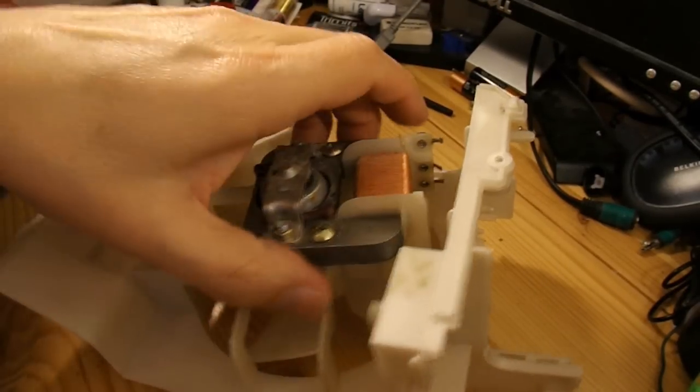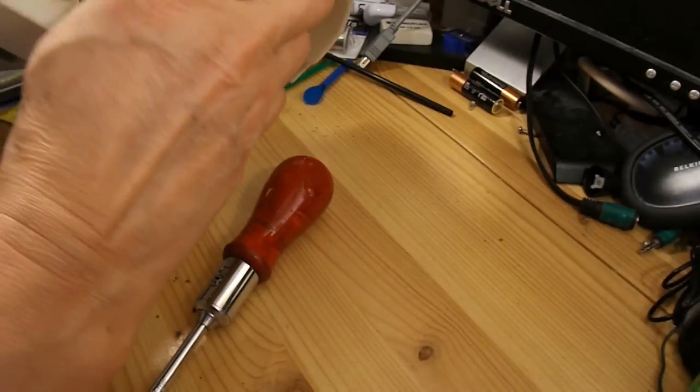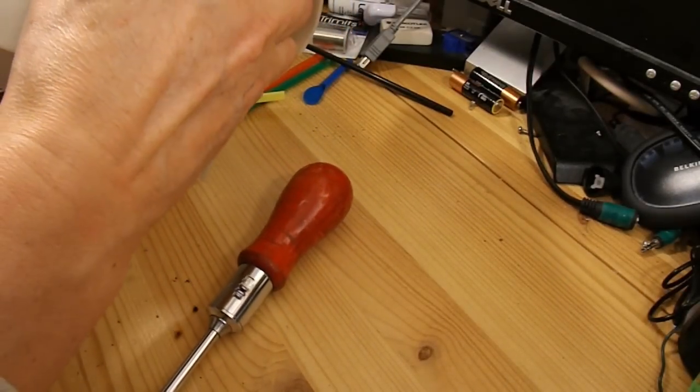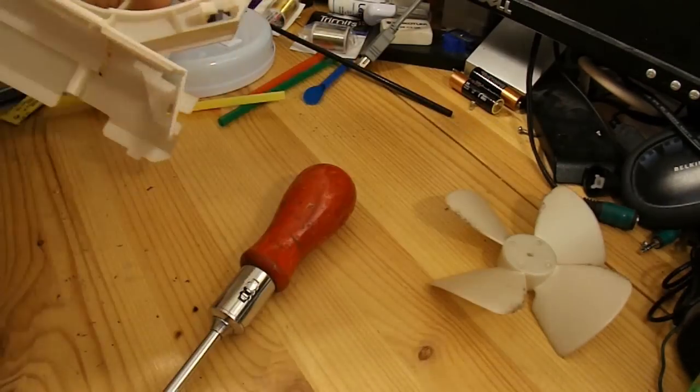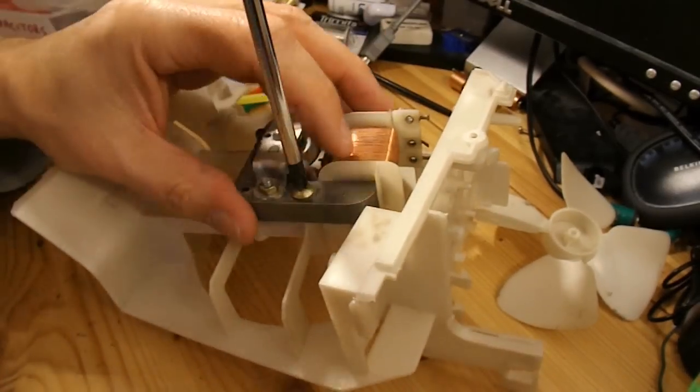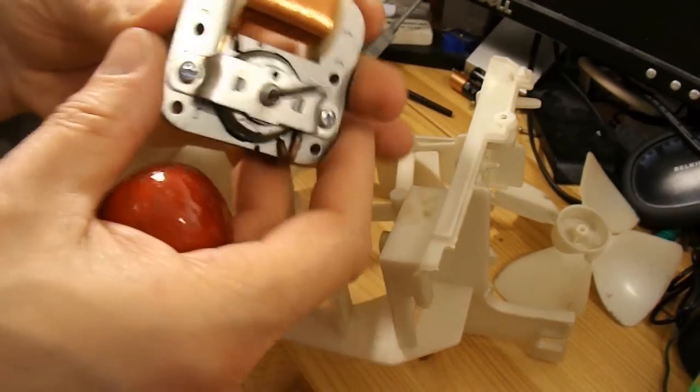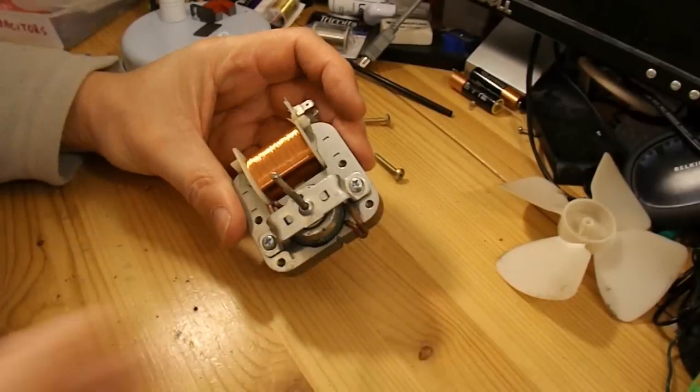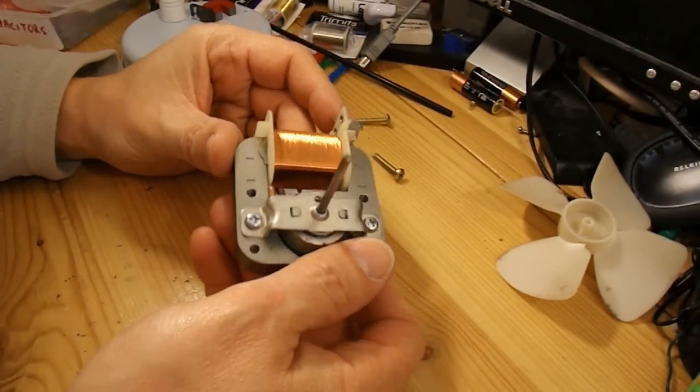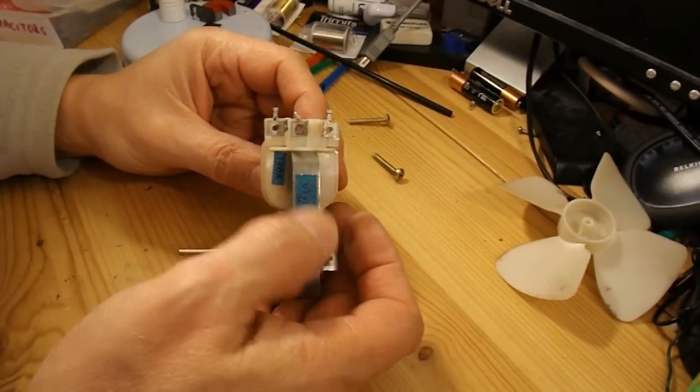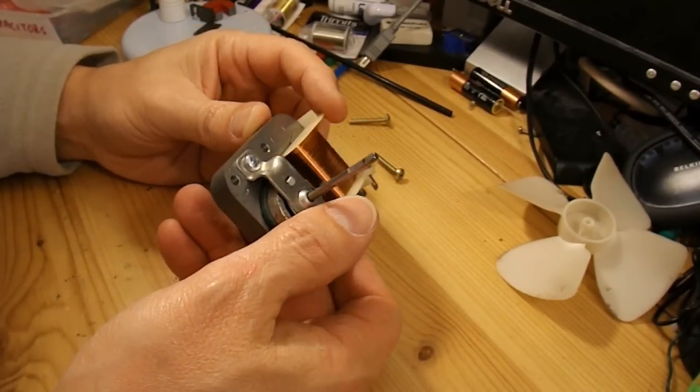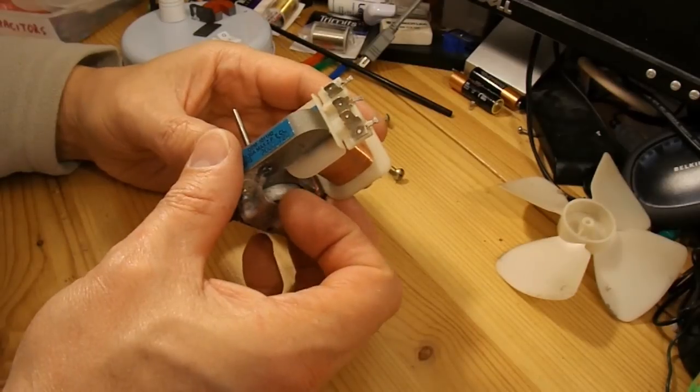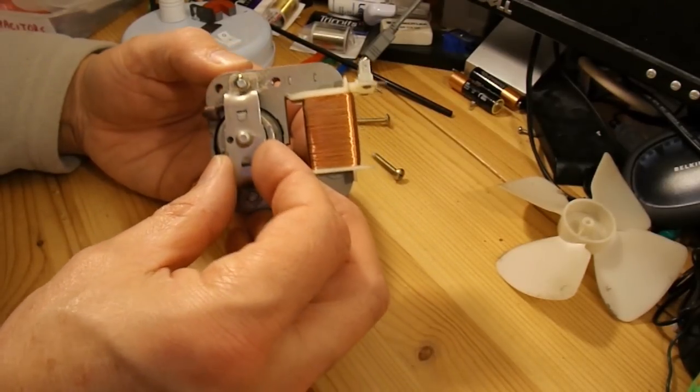First thing we'll need to do is take it apart. Looks like the fan just pulls off, so that's a good start. So the next question is, how easy is it to disassemble the core? Sometimes they're easy, and sometimes they're not.